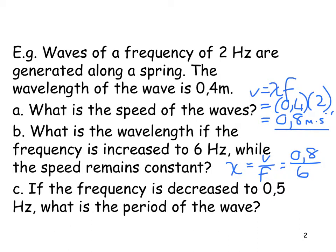And if the frequency was decreased to 0.5 hertz, what is period? Period is equal to 1 over frequency, and that is going to be 1 over 0.5, and that is equal to 2 seconds. We'll get this number on the next slide.